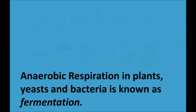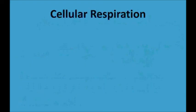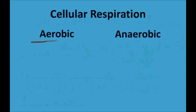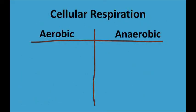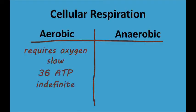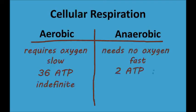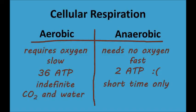That just about does it for the main points, but I'll do a quick recap before I finish. Cellular respiration is how organisms release the energy in their food. There are two types of cellular respiration: aerobic and anaerobic respiration. Aerobic respiration requires oxygen and is slow, but it produces a lot of ATP and can go on indefinitely. Anaerobic respiration doesn't require oxygen and occurs quickly, but it doesn't release much energy and can't go on for very long. Aerobic respiration produces carbon dioxide and water, and anaerobic respiration produces lactic acid in animals and carbon dioxide and ethanol in plants, yeasts and bacteria.